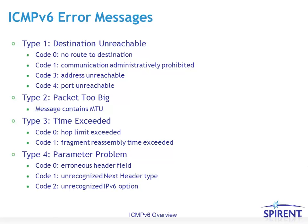ICMPv6 error messages have four main types. Type 1 is destination unreachable — depending on the code, it indicates a specific condition, such as code 0 for no route to destination. Type 2 is a packet too big message, meaning the packet exceeded the MTU of the outgoing link. Type 3 is a time exceeded message, meaning either the hop limit was exceeded or the fragment reassembly time was exceeded. Type 4 is a parameter problem message.